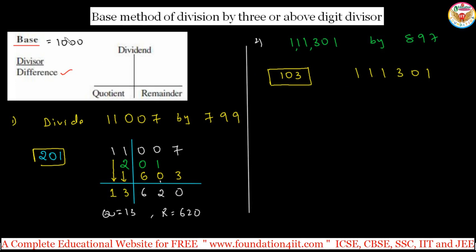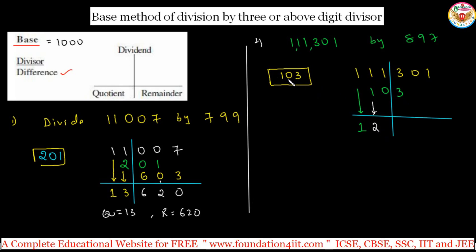Take the number 111,301. Because the base has three zeros, the number of digits on the right-hand side must be three. Keep a line and split accordingly. Same pattern: first digit is 1 — take 1 and multiply by 103, giving 103. Next line: 1 plus 1 is 2. Take 2 into 103, which is 206 — write carefully as two digits matching. Next: 1 plus 2 is 3. Take 3 into 103, which is 309. Write 309 under here.